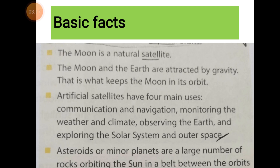And artificial satellites — gravity is an invisible force that pulls objects toward each other. That is what keeps the moon in its orbit. Gravity is what keeps the moon moving in its orbit.